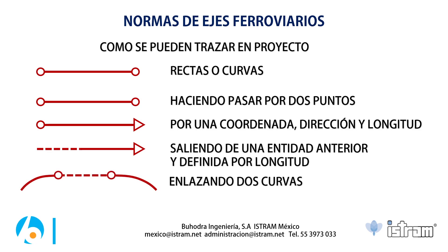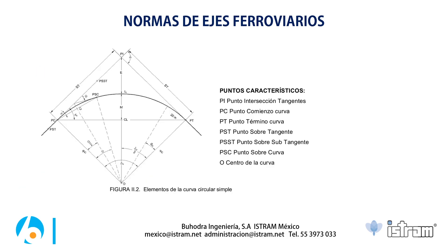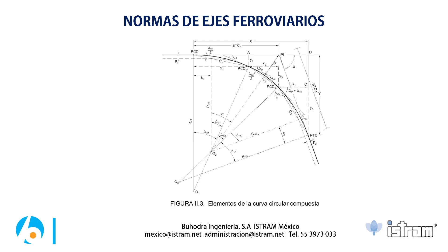Otra manera es enlazando dos curvas. El caso más usual es el de las curvas circulares enlazando dos rectas. Existen diferentes tipos de curvas: la más conocida es la curva circular simple, que tiene dos elementos rectos atrás y adelante. Este elemento tiene curvatura cero al inicio y al final — solo el arco circular tiene curvatura, y en ese momento hay un salto de curvatura que conecta una recta con la siguiente. Hay otro tipo de elementos más graduales, como las curvas circulares compuestas o de triple centro, que tienen el radio más pequeño en la cara interna, mientras que dos arcos circulares al inicio y al final funcionan como transición.